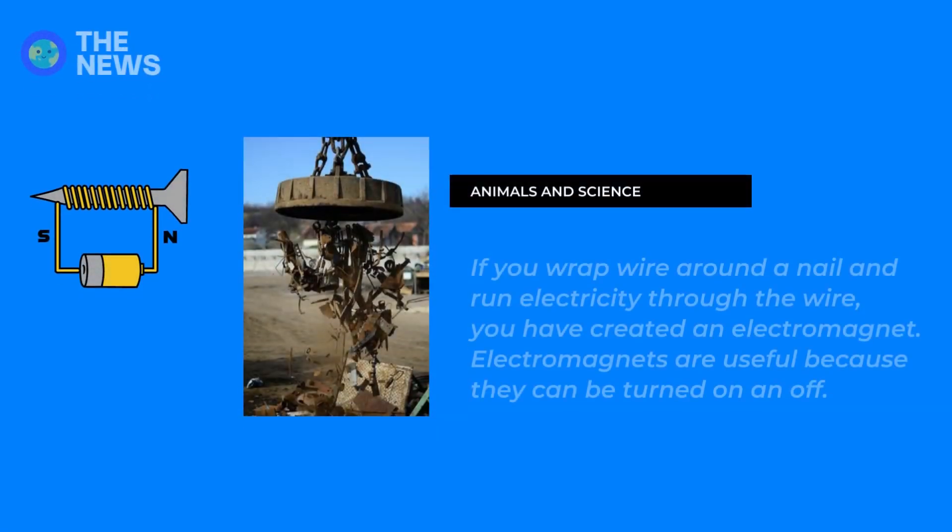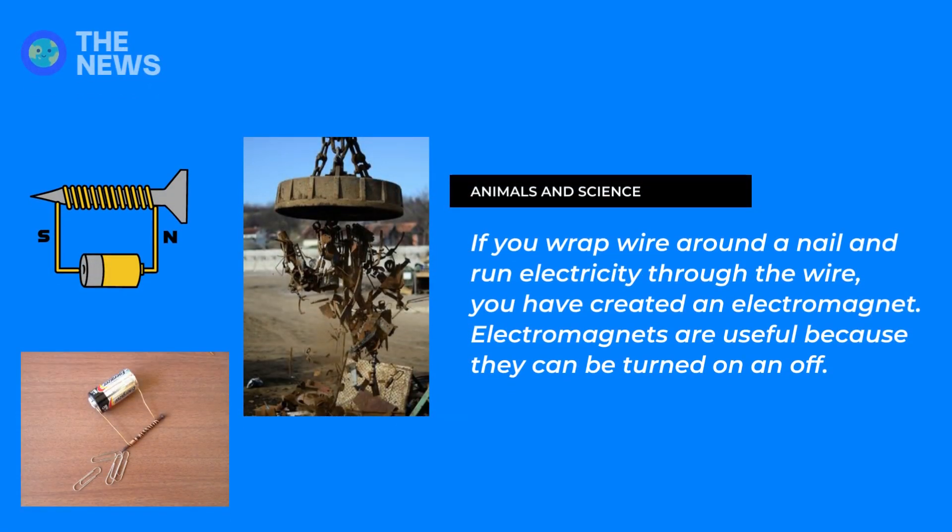If you wrap wire around a nail and run electricity through the wire, you have created an electromagnet. Electromagnets are useful because they can be turned on and off.